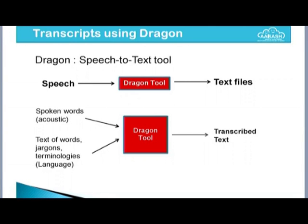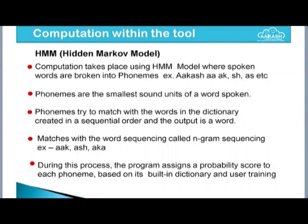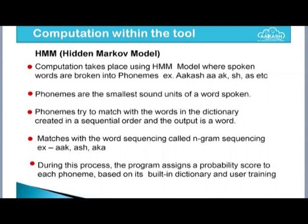When we talk about the tool, it is very complex — it works through mathematical and statistical models. One of the models used is HMM, the Hidden Markov Model. This computation requires a lot of memory, so the minimum memory required on your PC for transcript conversion is at least 4 GB — more is better. The computation using the HMM model breaks spoken words into phonemes, which are the smallest sound units of a word. These phonemes are then matched using n-gram sequencing, where phonemes come from the acoustic model and n-gram sequences come from the language model.